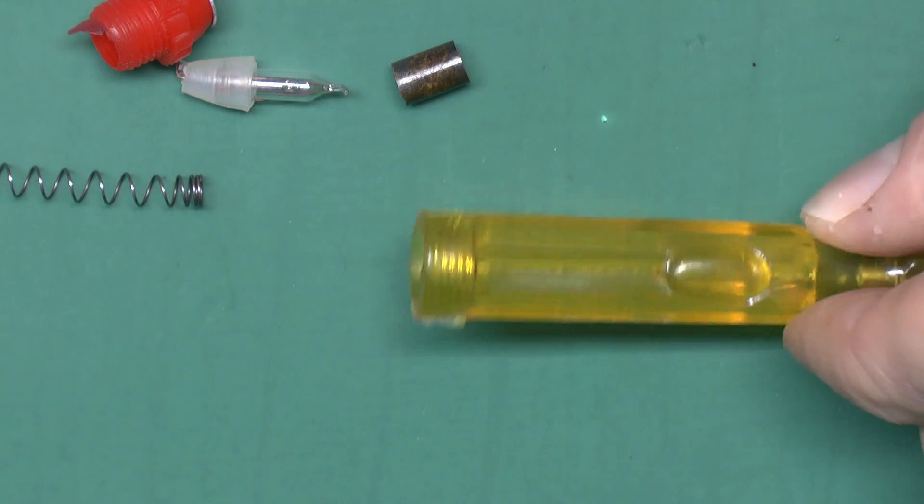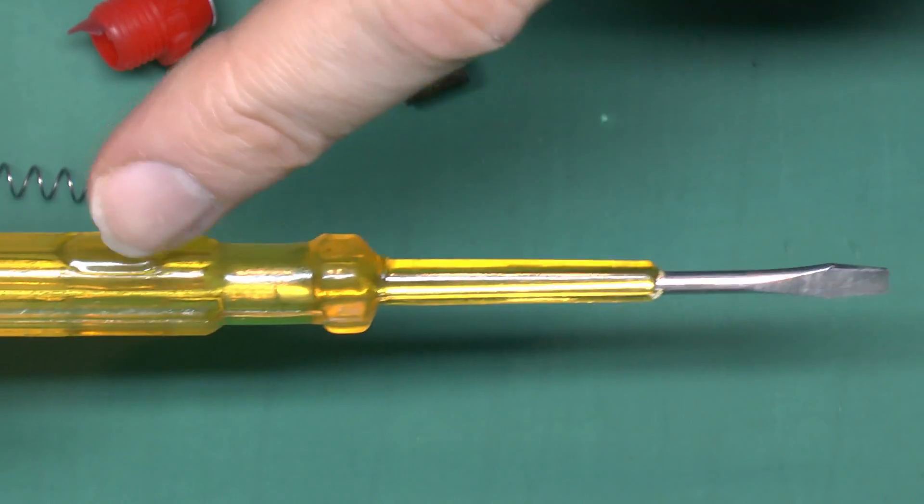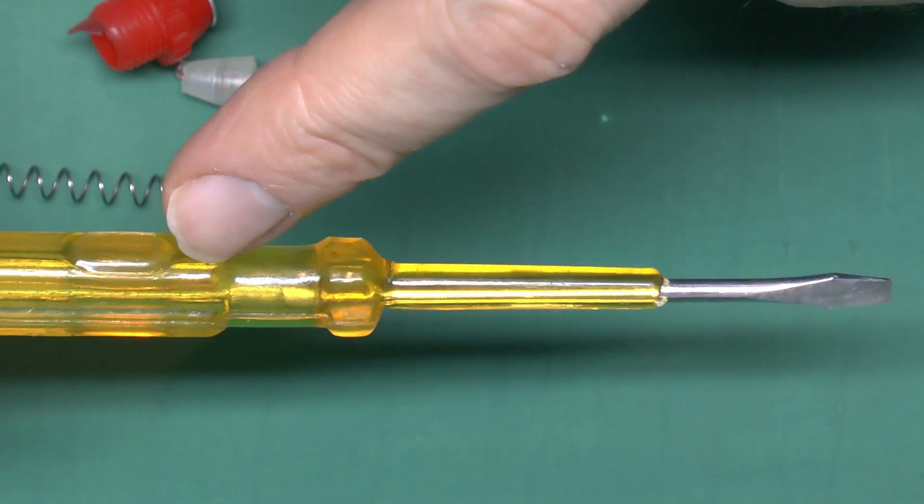Right. Now, here's the inside component. This is just a plastic molding, with the screwdriver blade embedded in it. That just goes straight through, up to that point. It's a solid piece of metal.